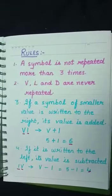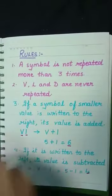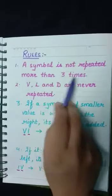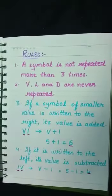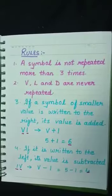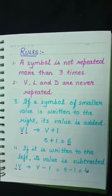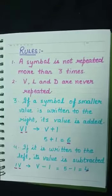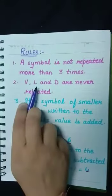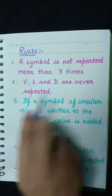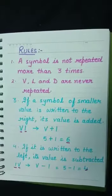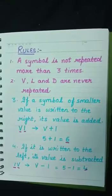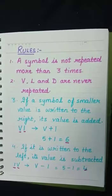अब हम कुछ rules पढ़ लेते हैं। First: a symbol is not repeated more than 3 times। जब भी हम Roman numerals लिखते हैं, कोई भी symbol तीन बार से ज़्यादा repeat नहीं हो सकता। Second: V, L and D are never repeated — ये तीन symbols कभी भी repeat नहीं किए जाते।